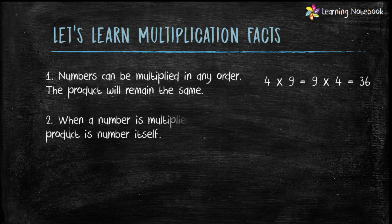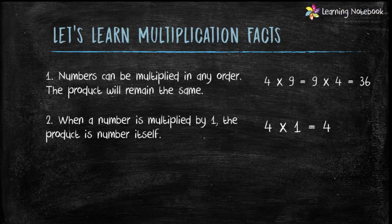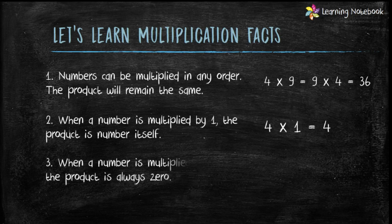The second fact is: when a number is multiplied by 1, the product is the number itself. For example, 4 into 1 equals 4, or 69 into 1 equals 69. The third fact is: when a number is multiplied by 0, the product is always 0. For example, 4 into 0 equals 0, or 90 into 0 is also 0.